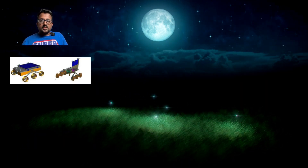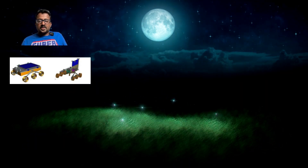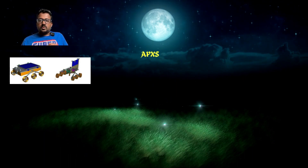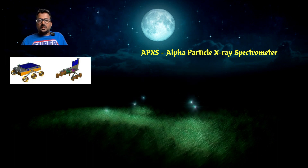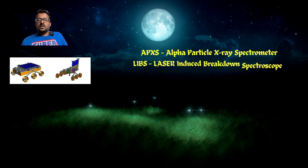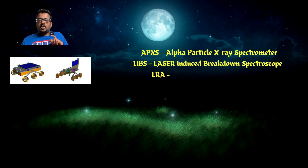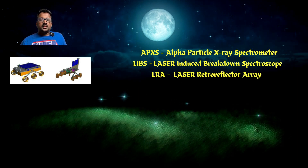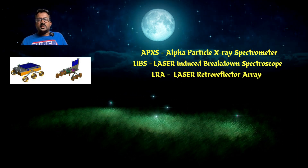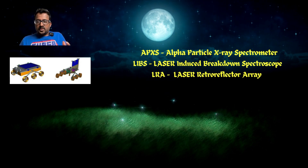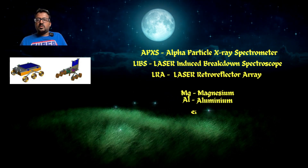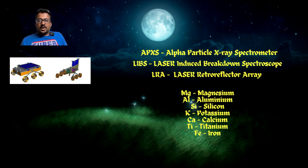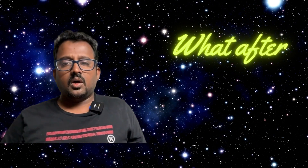Similarly, the rover also has multiple instruments. The first one is called APXS, the next one is LIBS, and the next one is LRA. APXS, LIBS, and LRA are mainly used to analyze various rocks, find out the composition of minerals they contain, and send the data back to us.